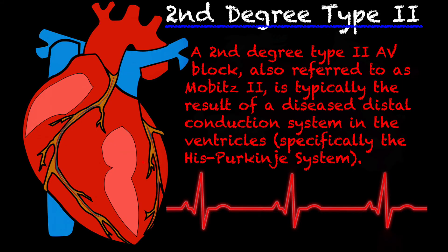Let's go ahead and start with a definition. A second degree type 2 AV block, also referred to as a Mobitz 2, is typically the result of a diseased distal conduction system in the ventricles, specifically the His-Purkinje system. We have done a video on a second degree type 1 heart block — I'll link it in the right-hand corner. This heart block is a bit more serious than the type 1 or Mobitz 1, mainly because it is closer to turning into a complete heart block or a third degree heart block.